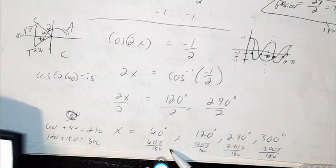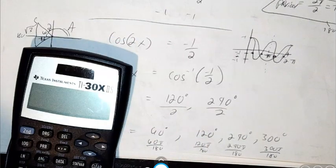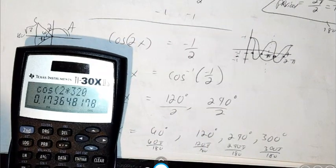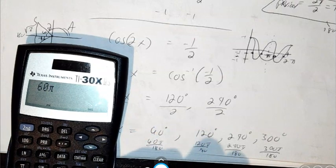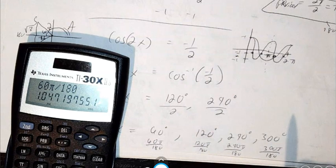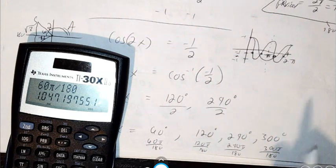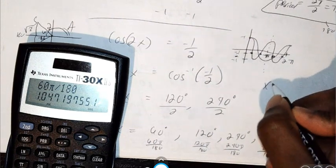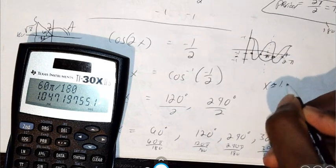So I'm going to plug each of these into my calculator to get the decimal form. So the first one is 60 pi divided by 180. And that's 1.05. So X is about 1.05.